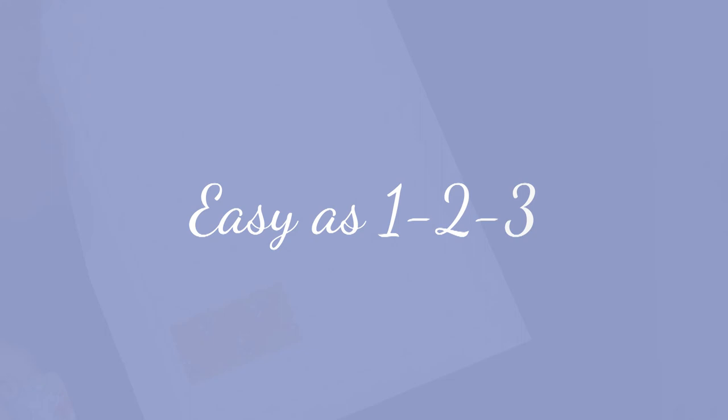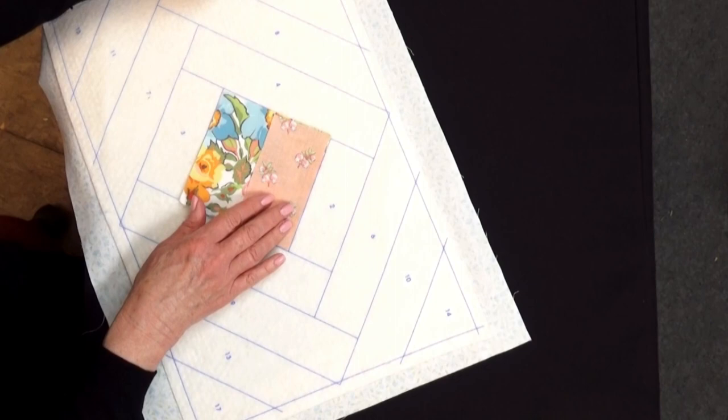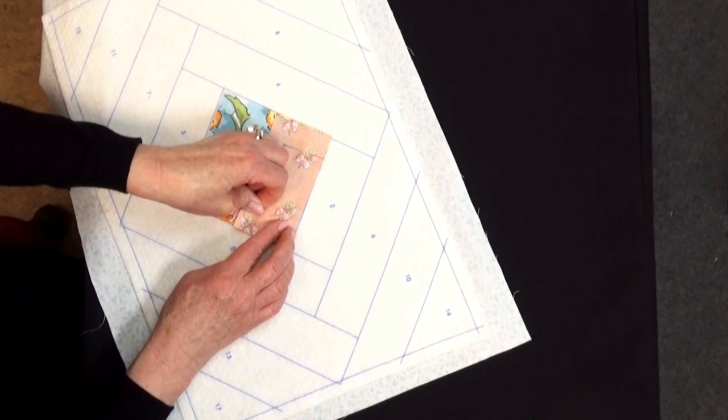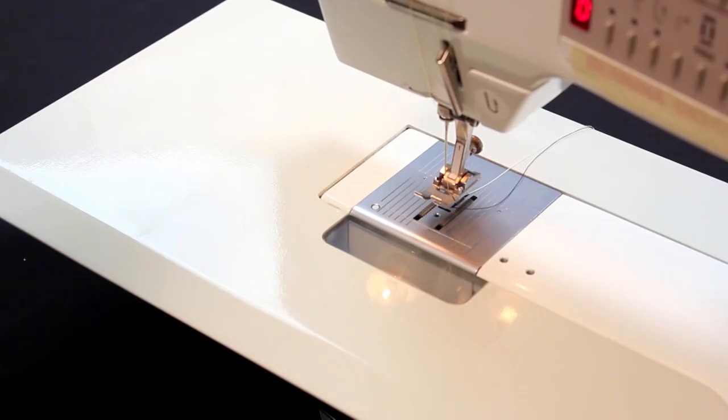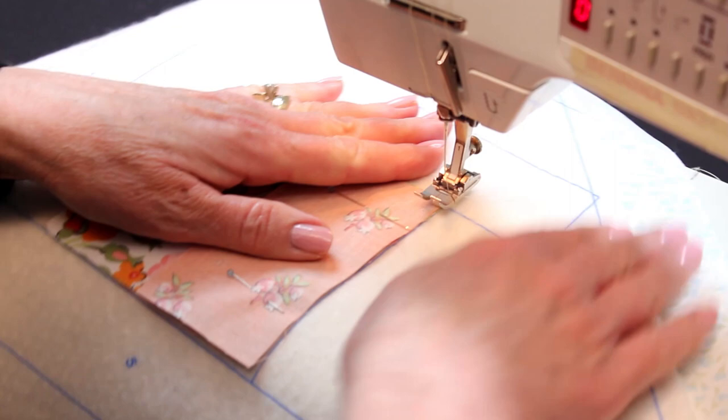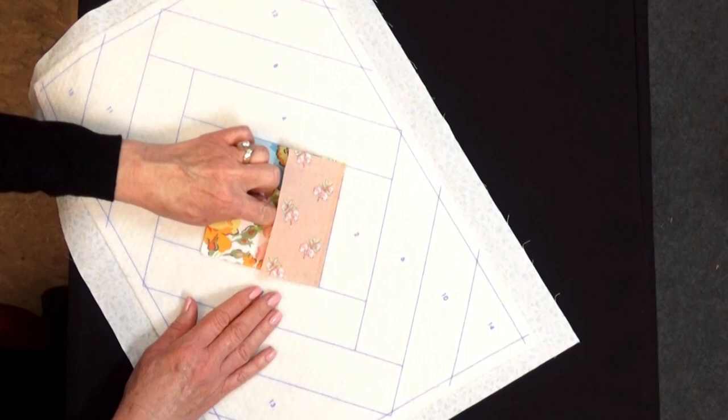Take piece one, which is our five inch square of the large floral, and place it in the center over the number one. Then take piece number two, which is a strip, one of our orange strips, and place it right sides together over the top of piece one, aligning both raw edges on the line that you see on the batting. So the lines on the batting are not sewing lines, but they're placement lines. Then we're going to go to the machine, and we're going to sew through all layers, piece one, two, batting and backing in a scant quarter inch seam allowance. Now that the stitching is done, we're going to remove the pins, and we're going to flip that fabric strip over. It should land right on the line, and we're going to finger press that seam allowance open.